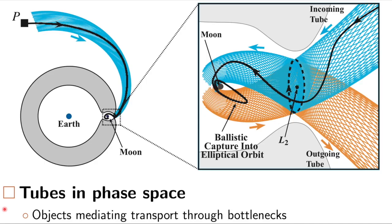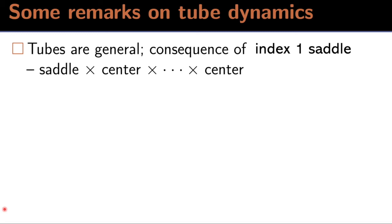And these are what control or mediate temporary capture of a test particle around the smaller mass. These tubes are very general. They're a consequence of the Lagrange points being an index 1 saddle. That means they have a particular stability type where they have a single unstable direction, a single stable direction, and the rest are neutrally stable or center directions that correspond to oscillatory motion.